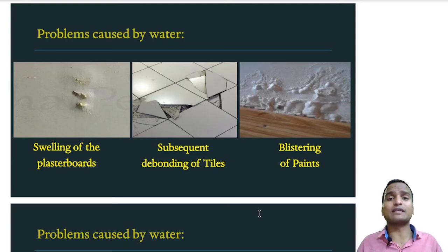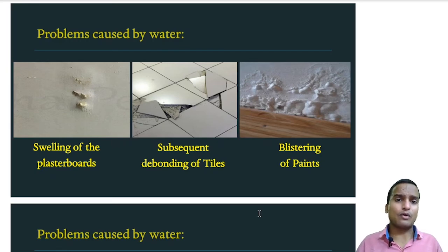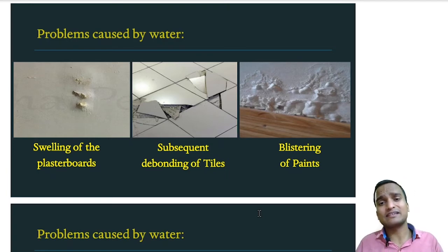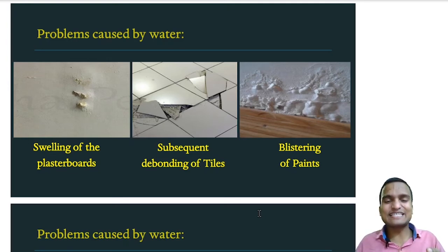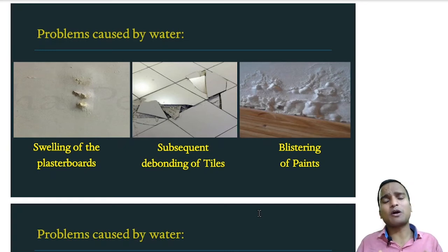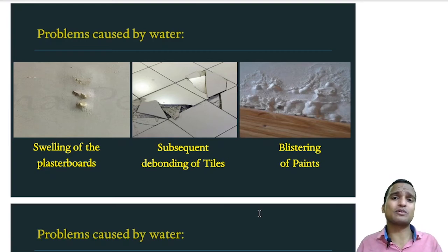Another phenomenon is the blistering of paints, mainly seen near the floor on walls. Even if you try to cover the blistering by providing tiles, the blistering re-occurs above the tiles through capillary action — because once water enters, it wants to come out and will rise through capillary action beyond the tile level. These problems cannot be solved by patch-up solutions; we must address the root cause of dampness through proper damp proofing or waterproofing.